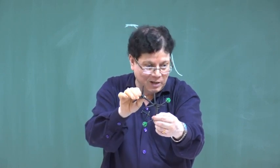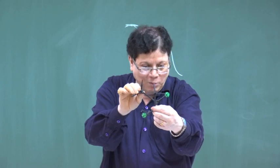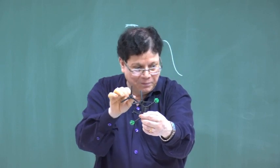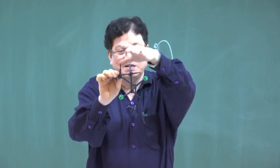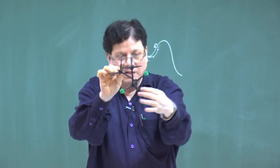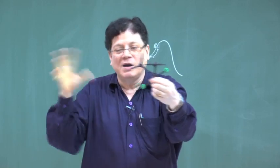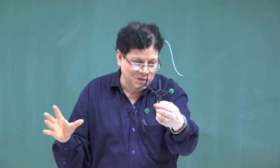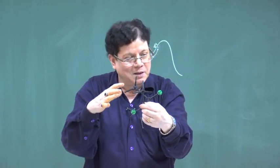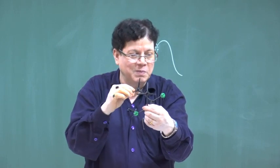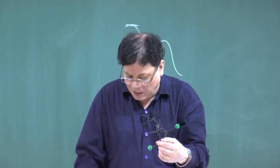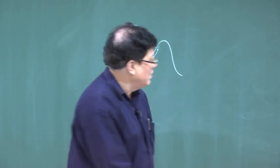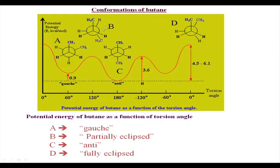There is no torsional strain in the gauche form, but the strain that is present is from the methyl groups still not being far enough that the van der Waals repulsive force is zero. So there is some van der Waals repulsion still present between the two methyl groups. However, this has lower energy than the eclipsed form, as shown in the energy profile.